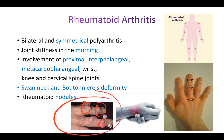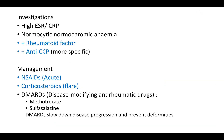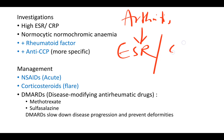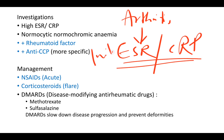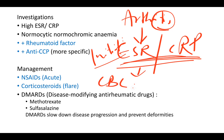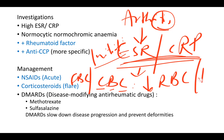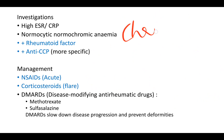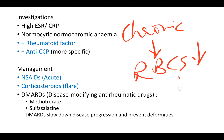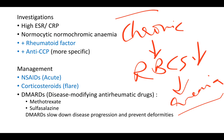Another symptom is rheumatoid nodules — multiple nodules over the fingers, though they can appear on other body parts too. When testing, ESR and CRP will be elevated, confirming ongoing inflammation. A CBC (complete blood count) will show decreased RBCs and decreased hemoglobin, indicating anemia. This is anemia of chronic disease — initially presenting with low iron, eventually becoming normocytic and normochromic.